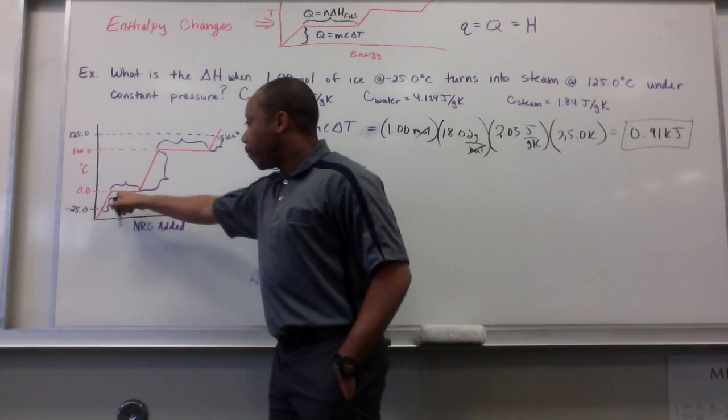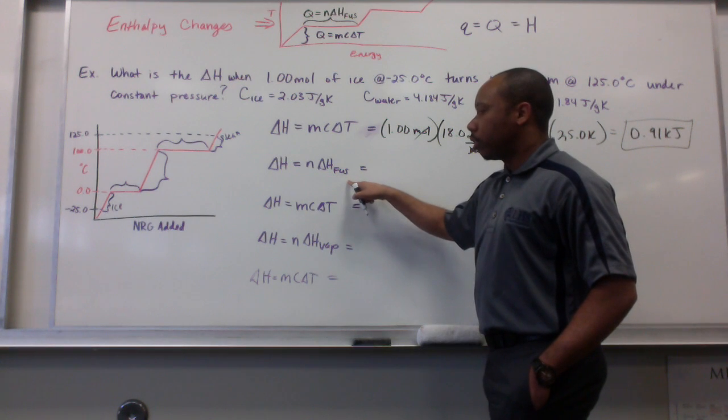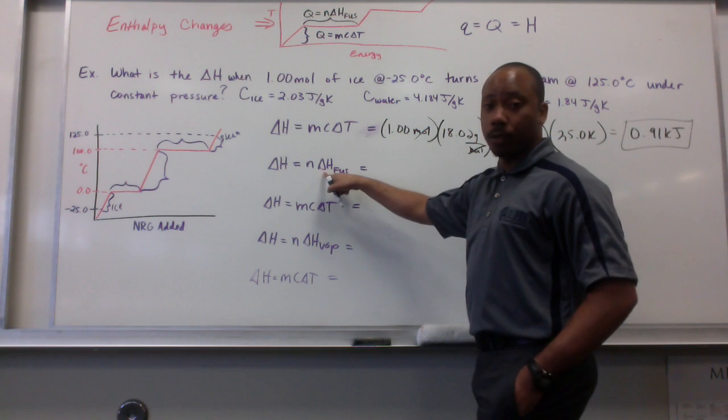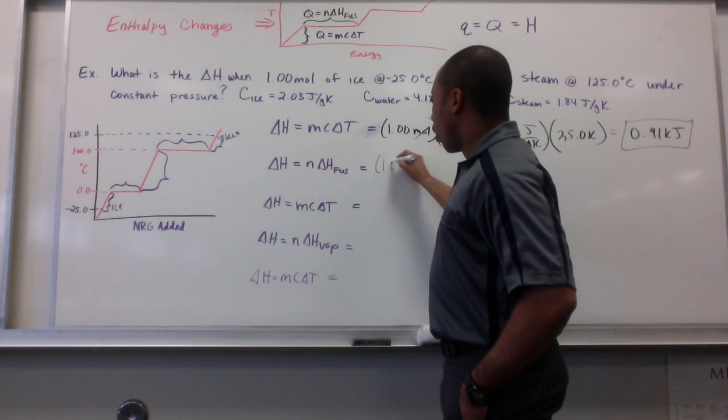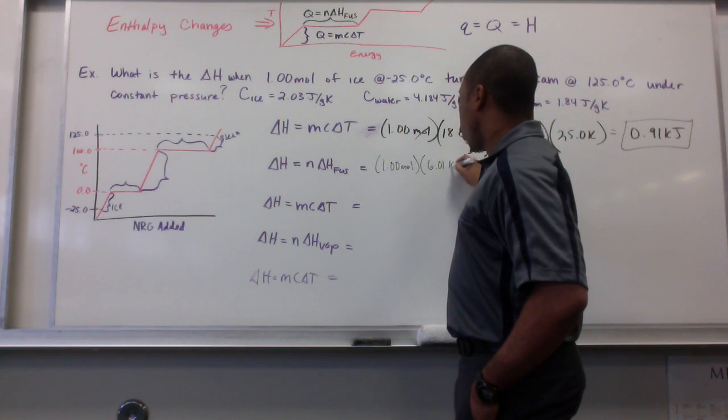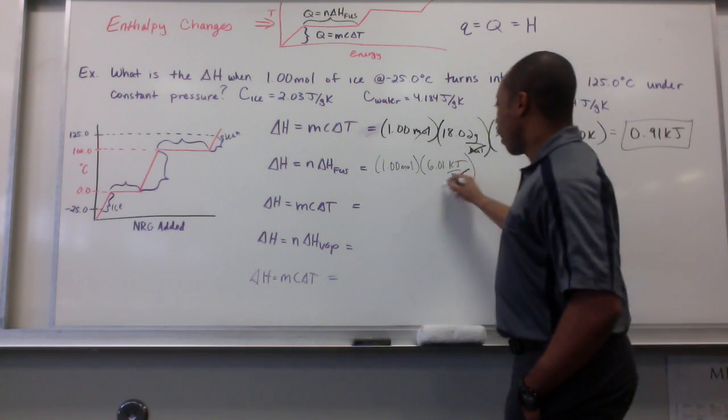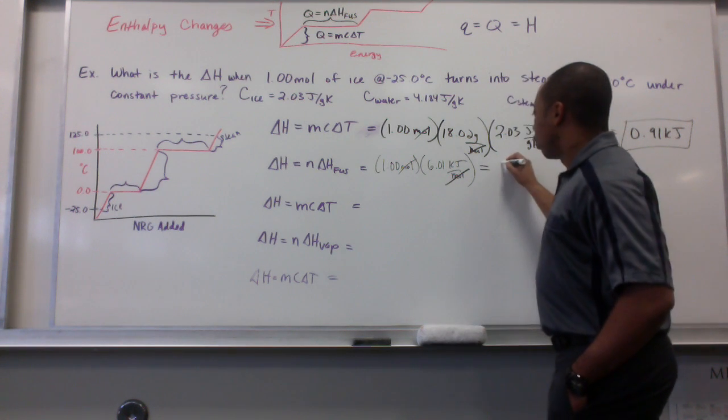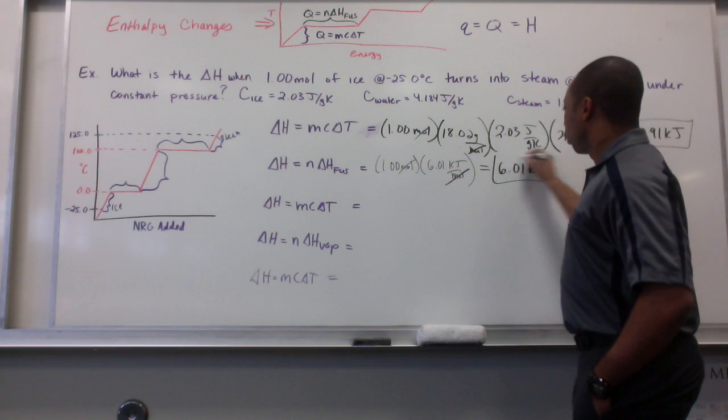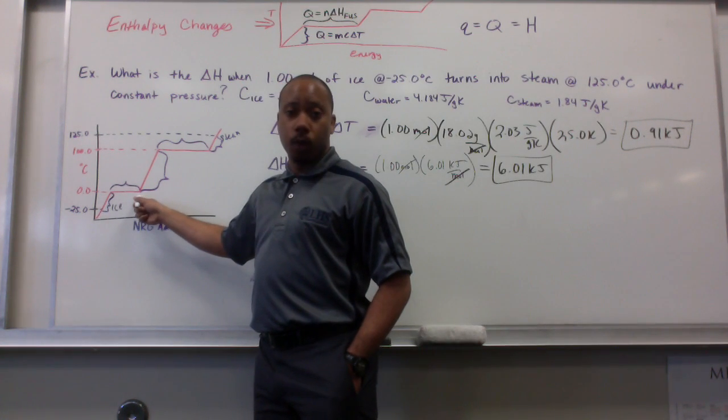This is the heat associated with taking ice from negative 25 degrees Celsius to 0 degrees Celsius. Now, I have to go through my phase change, fusion. To do that, I use this equation. The amount of ice that's going to be going through fusion times my heat of fusion. So, I have 1 mole times my heat of fusion, which is 6.01 kilojoules per mole. And, voila, that's it. So, it takes 6.01 kilojoules to take 1 mole of ice and turn it into liquid water.